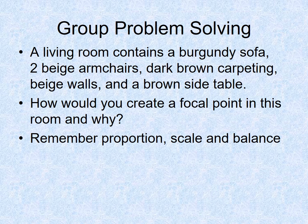And then what I would like you to do is to think on your own. There's a living room that contains a burgundy sofa, two beige armchairs, a dark brown carpet, beige walls, and a brown side table. How could you create a focal point in this room and why? I would like you to write a two to three sentence reflection on that idea and think about balance and proportion and scale when you're talking about this particular living room.